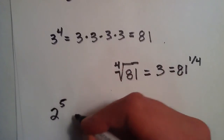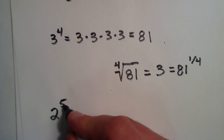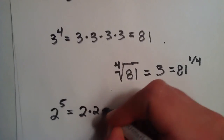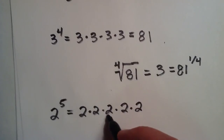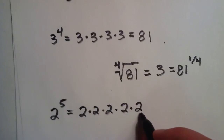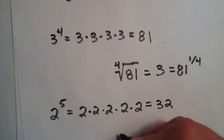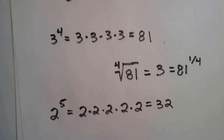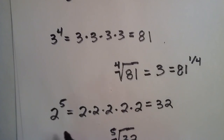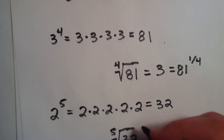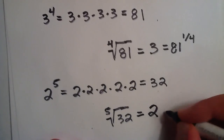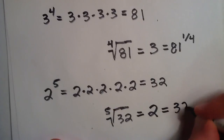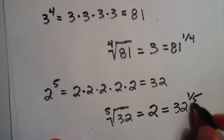Let's try one more example: 2 to the fifth power. So this is the base 2 multiplied by itself 5 times: 2 times 2 times 2 times 2 times 2. 2 times 2 is 4, 4 times 2 is 8, 8 times 2 is 16, and 16 times 2 is 32. Now we start with the 32 and want to work our way back to the 2. So we take the fifth root of 32, because it took the fifth exponent to get us there. The fifth root of 32 undoes the process and brings us back to the 2, which can also be written as 32 to the one-fifth power, writing the base in the denominator.